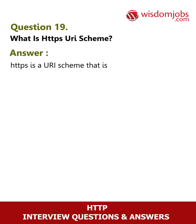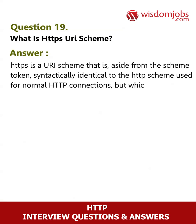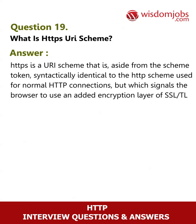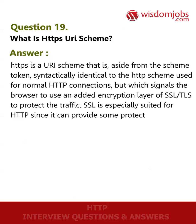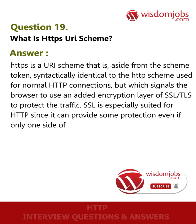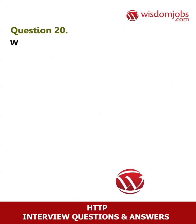Question 19: What is HTTP's URI scheme? Answer: HTTPS is a URI scheme that is, aside from the scheme token, syntactically identical to the HTTP scheme used for normal HTTP connections, but which signals the browser to use an added encryption layer of SSL/TLS to protect the traffic. SSL is especially suited for HTTP since it can provide some protection even if only one side of the communication is authenticated.